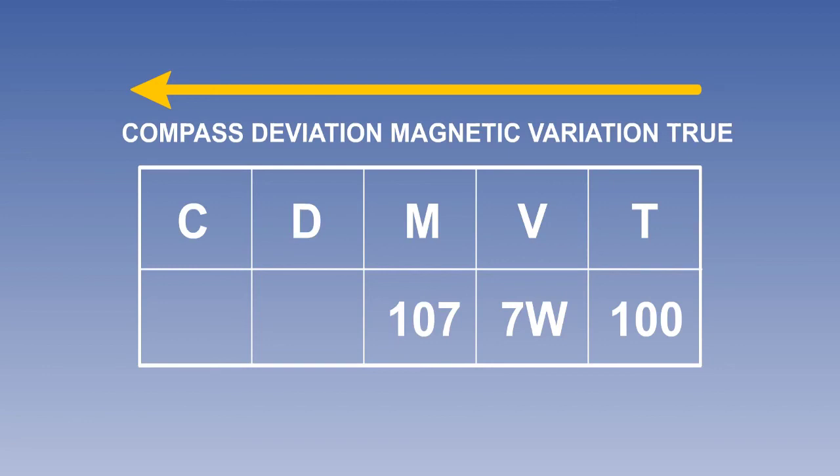We will use a deviation of 2 degrees east. East is least. So the 107 degrees magnetic becomes 2 degrees less, giving us 105 degrees compass heading.